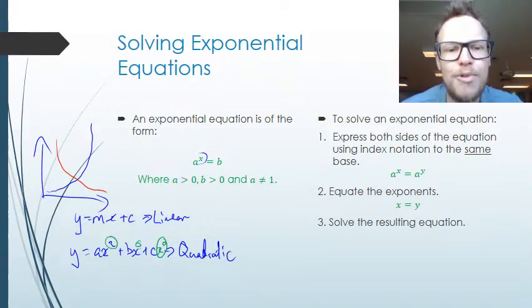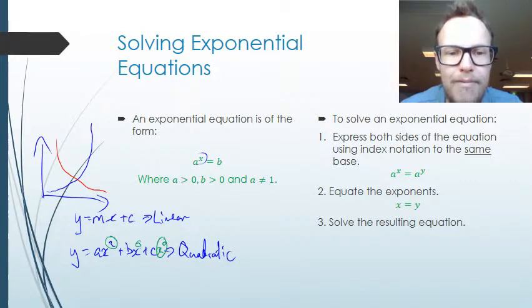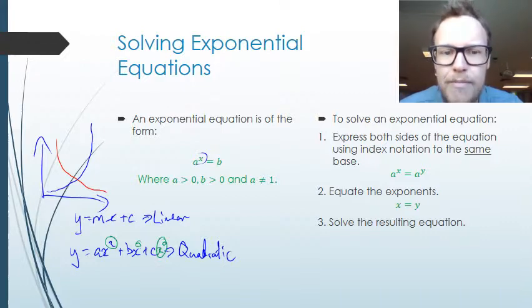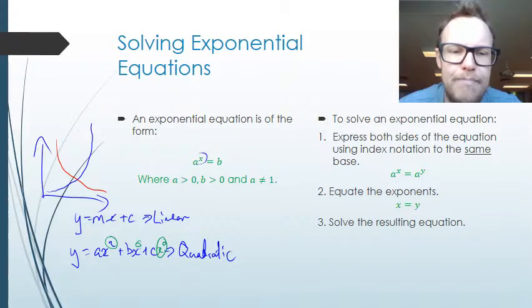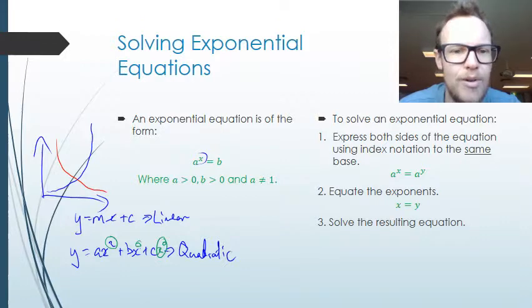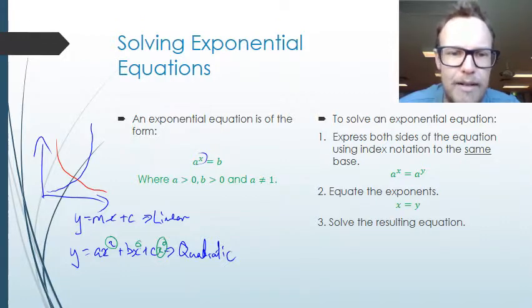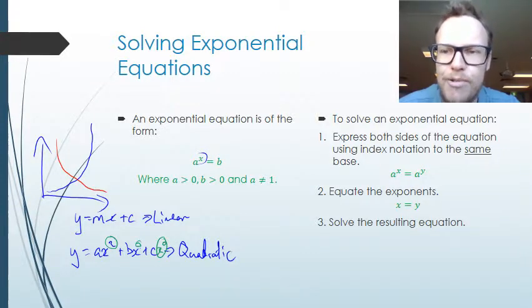The reason why a cannot equal 1 is because if a equals 1, then we constantly have 1 to the power of x. Anything — 1 to any power — is just going to equal 1. Whether it's 1 times 1 times 1 times 1, or 1 over 1, it's always going to be 1. So we need to make sure that a is not equal to 1.